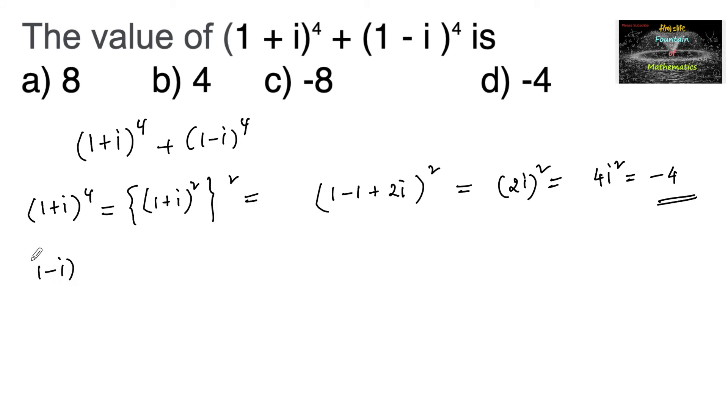Now what is (1 - i) whole power 4 equal to? We can write (1 - i) whole square, again whole square. So we can write 1 square plus i square, that is minus 1, minus 2i, whole square, which is equal to minus 2i whole square, that is 4i square, that is minus 4.